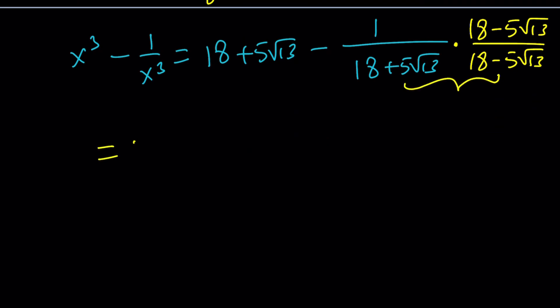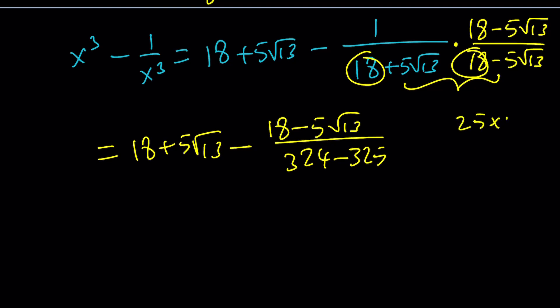From here, we're going to get 18 plus 5 root 13 minus... Now, in the numerator, I have 18 minus 5 root 13. In the denominator, I have 18 squared, which is 324. And 5 root 13, multiply by itself, is going to be 25 times 13. And if you do 25 times 13, that should be 325. Because if you think about it, 25 times 12 is 300. And then you just need to add 25.